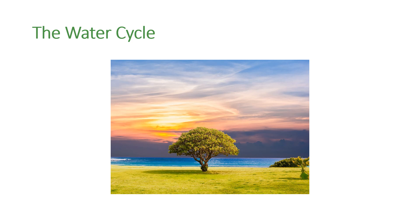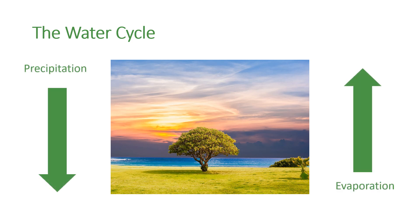The water cycle provides fresh water for plants and animals on land before draining into the seas. Water is continuously evaporated and precipitated.